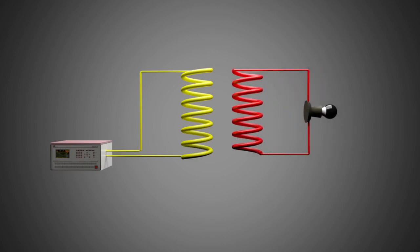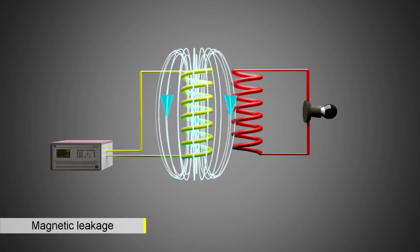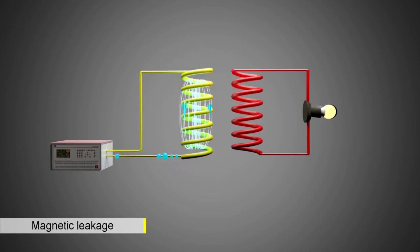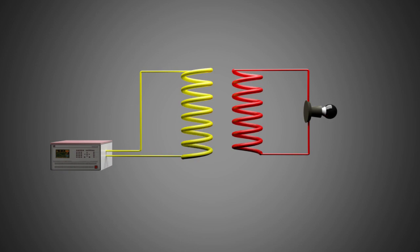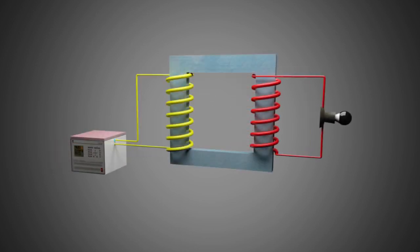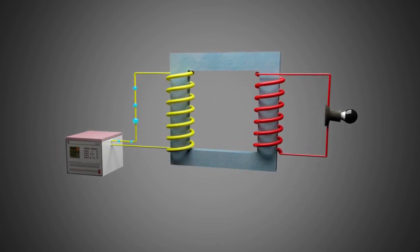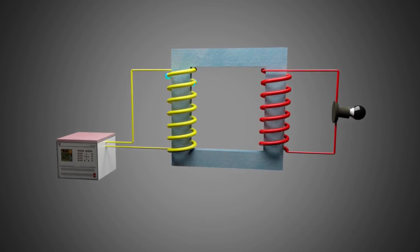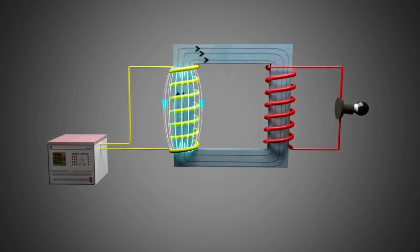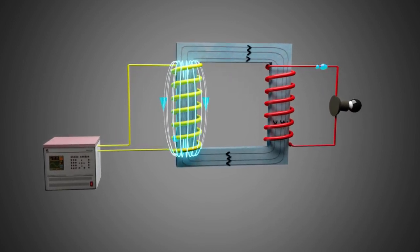But if we have coils alone, all the magnetic flux from one coil will not link with another, as there will be some magnetic leakage. Thus, the transfer of energy won't be efficient. For this reason, we use a metal core.